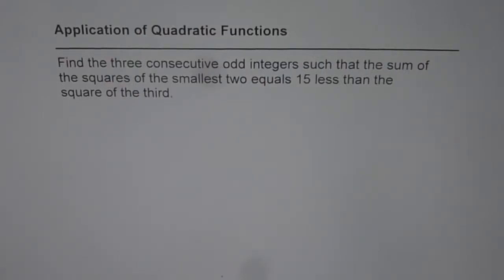Application of quadratic functions. Find the three consecutive odd integers such that the sum of the squares of the smallest two equals 15 less than the square of the third.